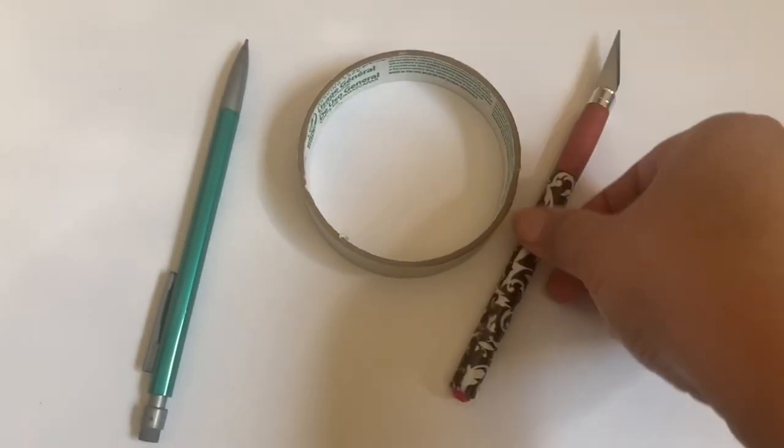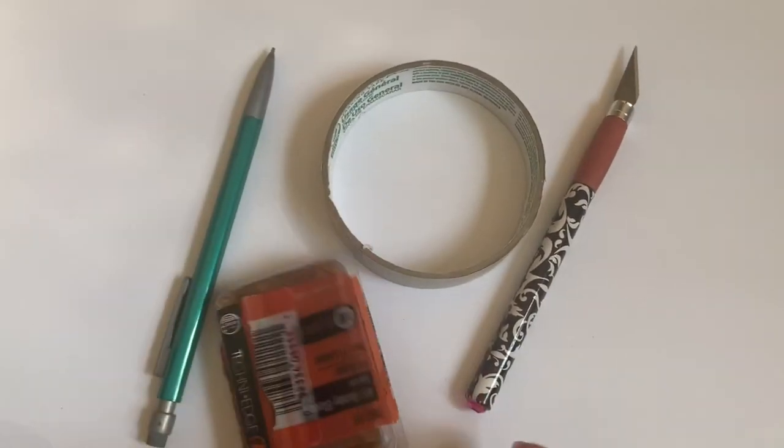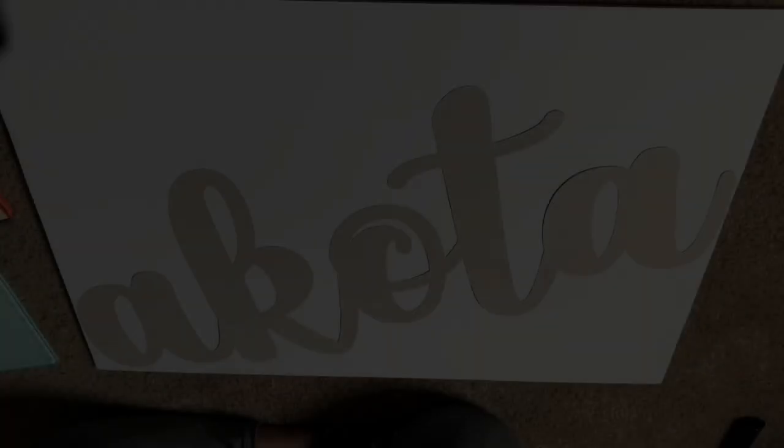Okay, so first the materials that you'll be needing is a pencil, tape, exacto knife, a lot of extra blades, and of course a foam board. The one that I'm using is 30 by 20 inches.